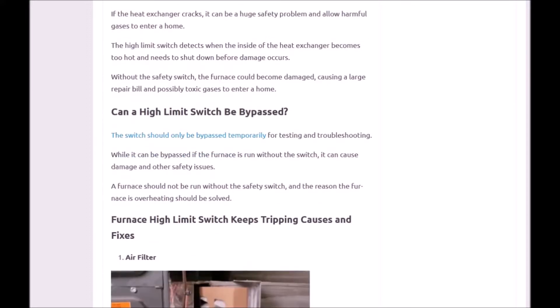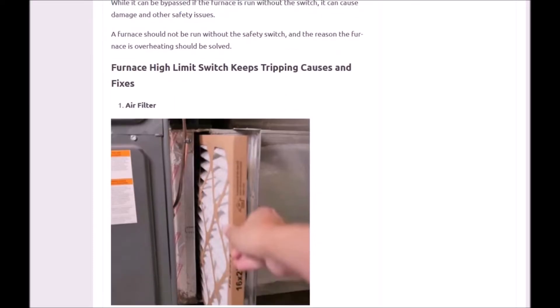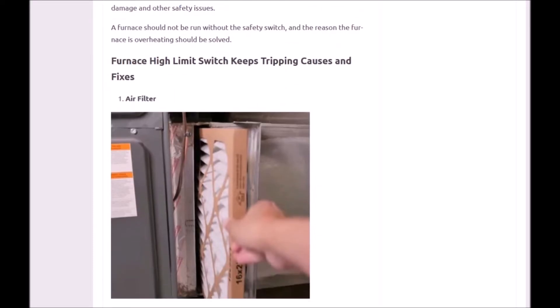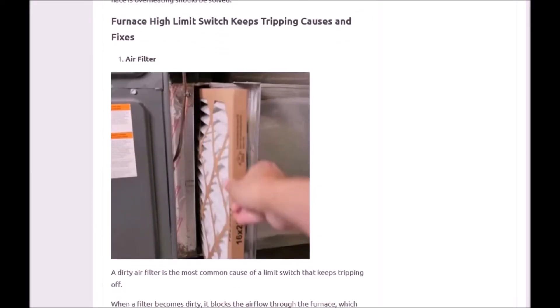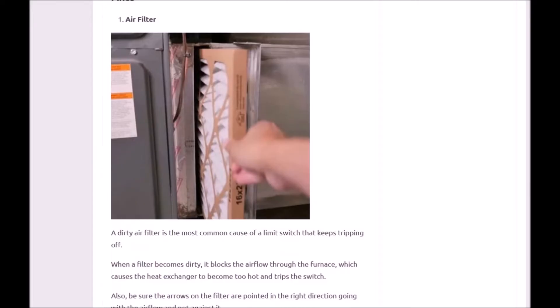So what are some of the main causes and fixes for a furnace high limit switch that keeps tripping? Number one is the air filter. This is very common—the air filter is just completely clogged up and no air can get by. When no air can flow by the heat exchanger, it's not carrying away the heat into the home, so it quickly overheats the whole furnace and the high limit switch will trip off.